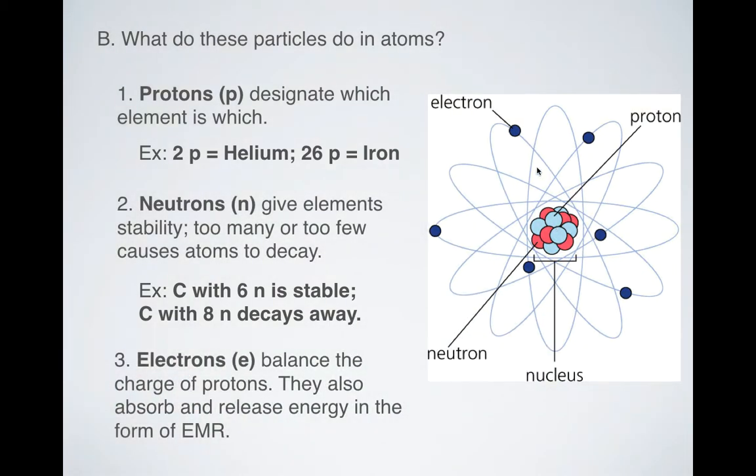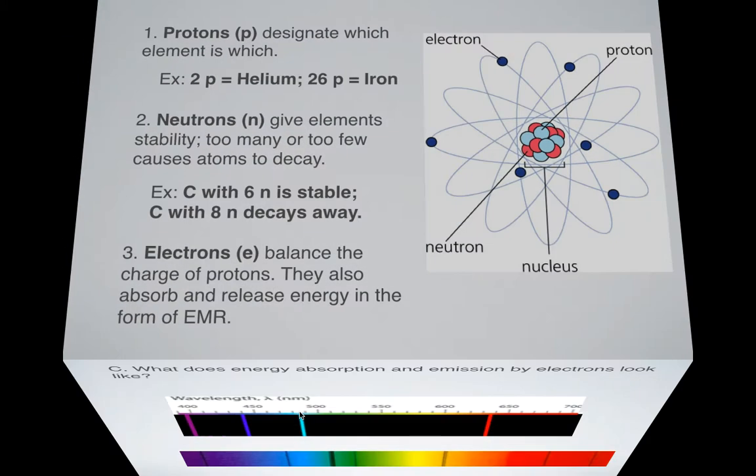Electrons. Well, they balance out the charge of the protons. So protons are positive, remember. Electrons are negative. So they balance each other out. They also absorb and release energy in the form of electromagnetic radiation. So they can release things that we talked about, they can release some gamma rays, x-rays, UV, visible light, stuff like that, microwaves, infrared, all that kind of stuff.